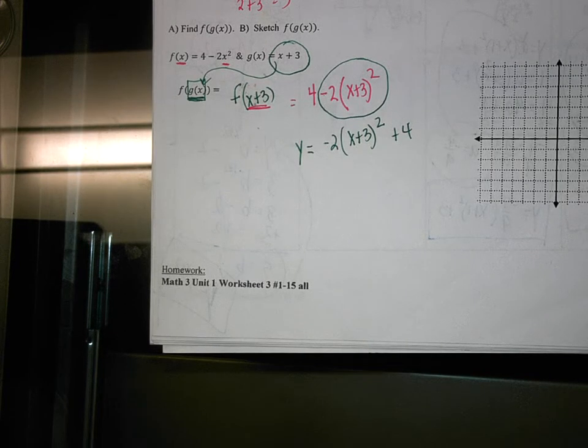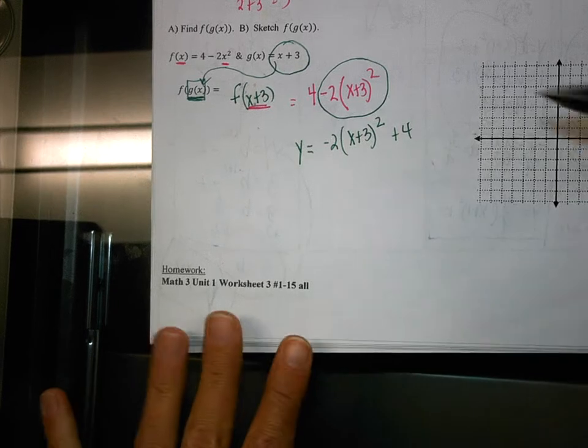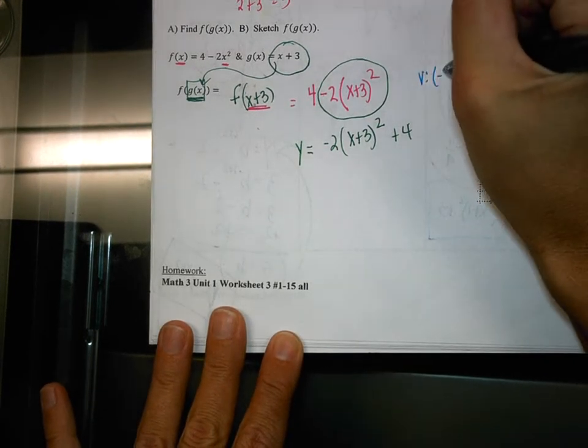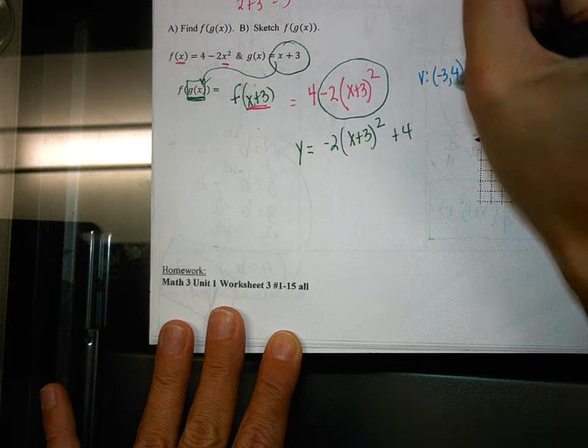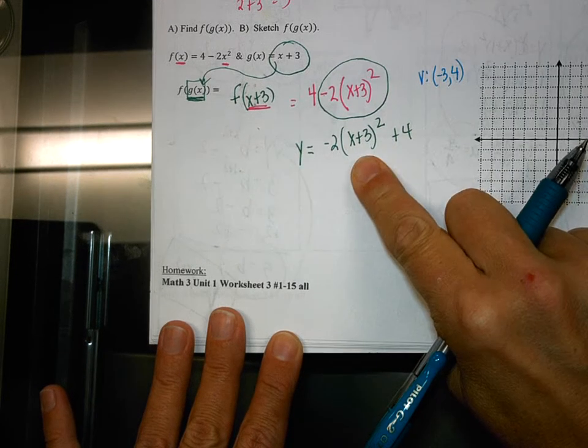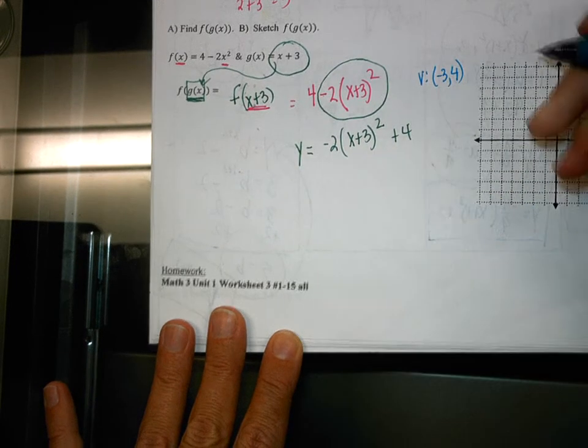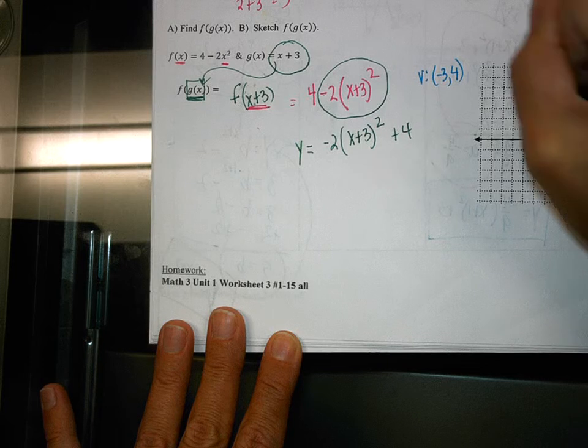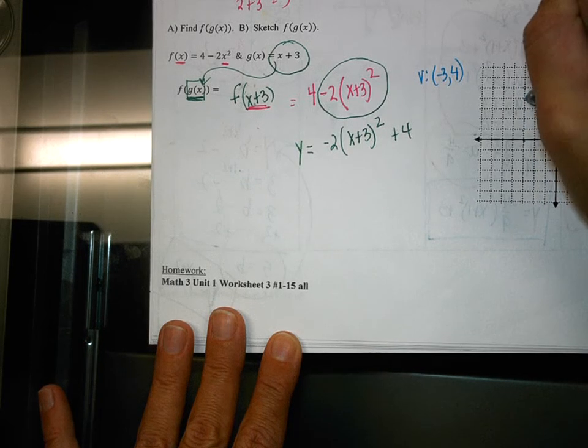What is my vertex? Negative 3, 4 is correct. Good. Set that equal to 0. And then there's the 4. So we get negative 1, 2, 3. Up 1, 2, 3, 4. Make our point. What type of equation is this? Or function?